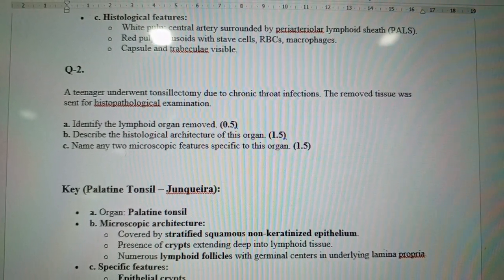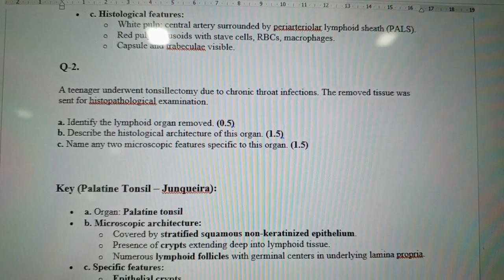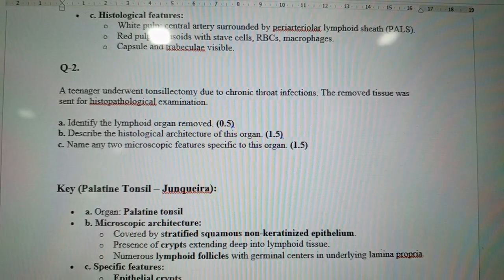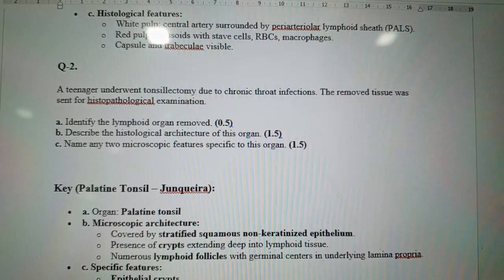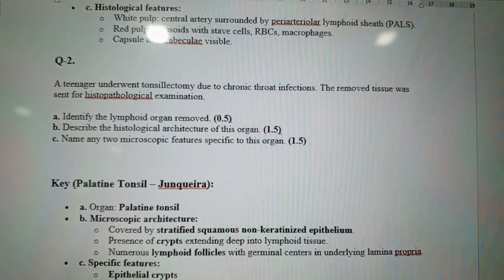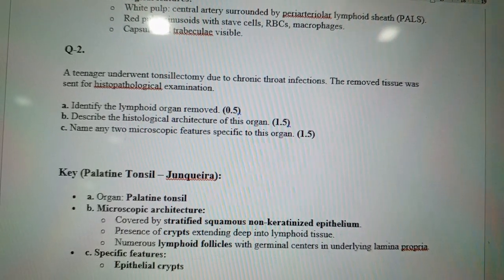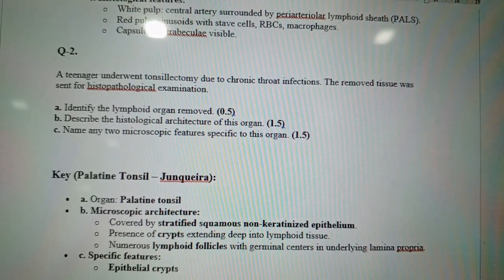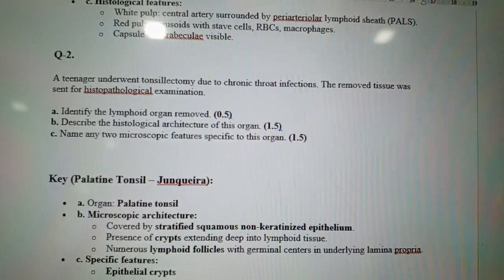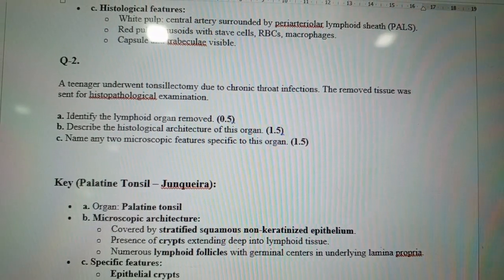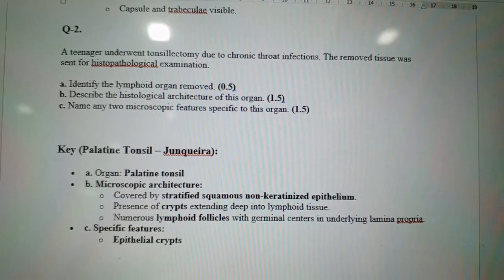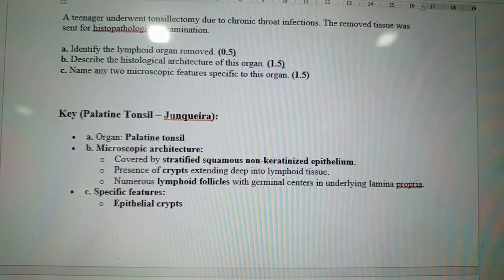These types of questions may appear in your examination. The key structure is the palatine tonsil. Part A may ask you to identify the organ and describe its microscopic features. If they ask for two microscopic features but the marks are 1.5, write three points at 0.5 each — use your common sense.